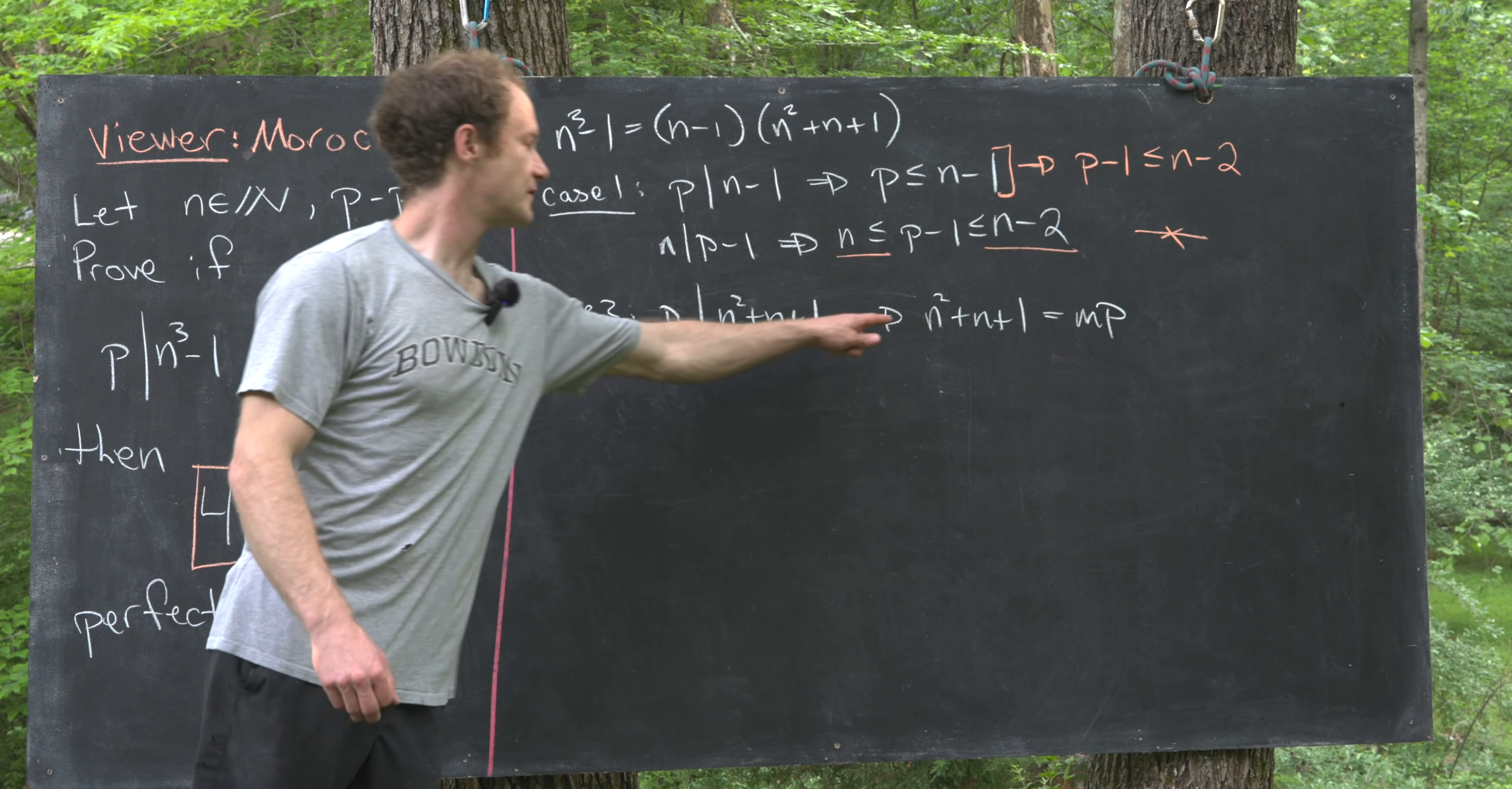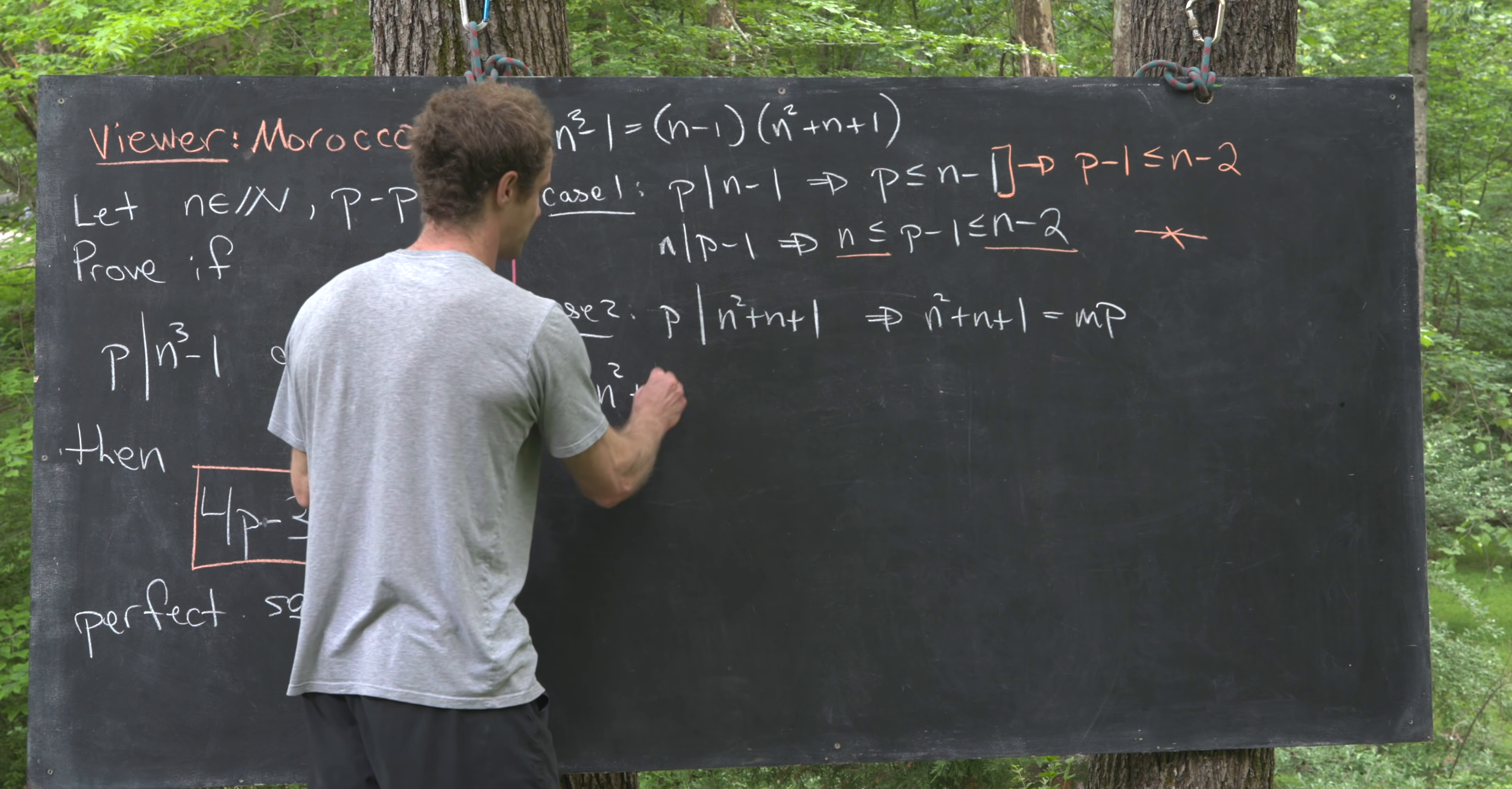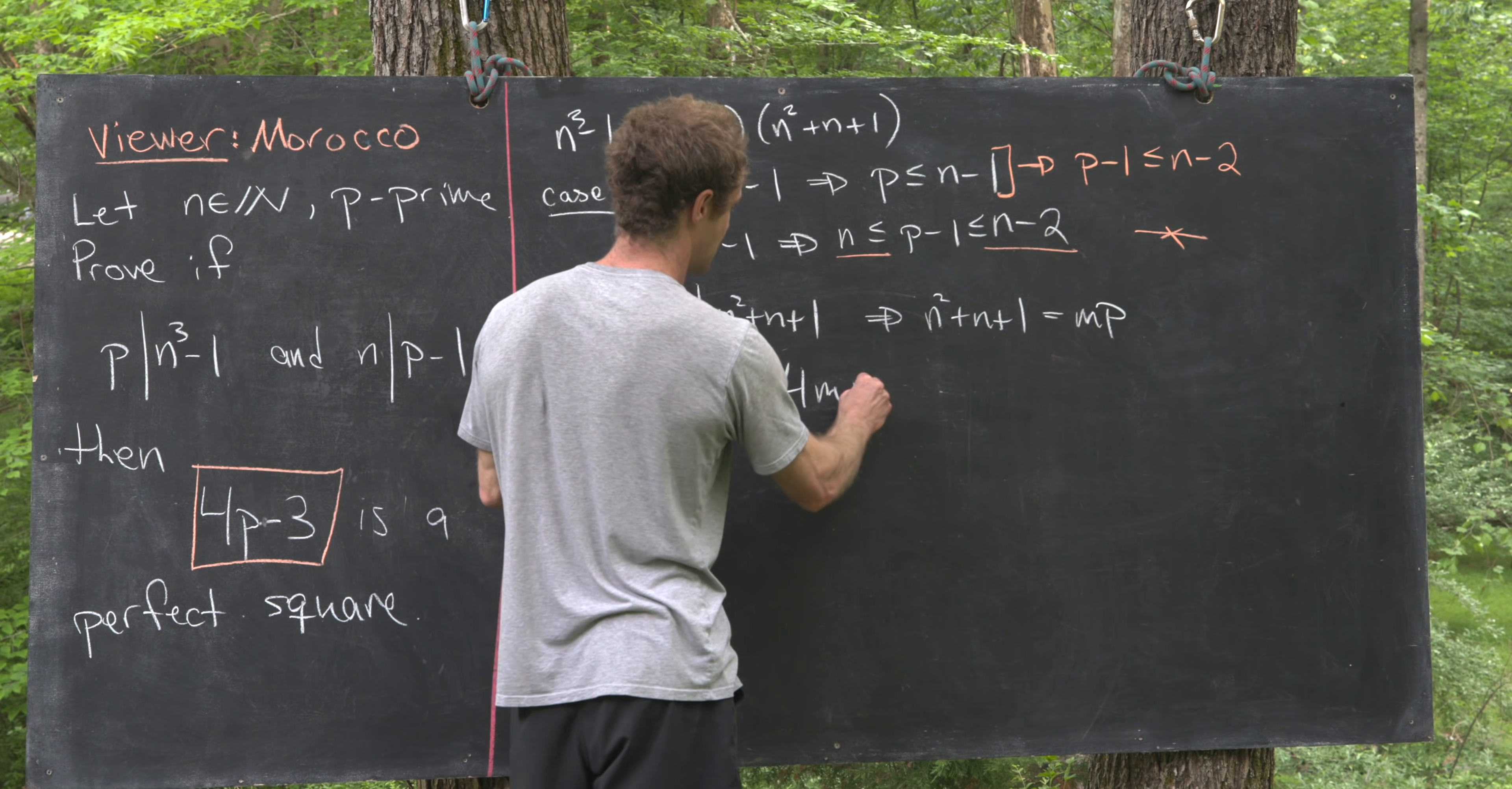So that gives us some motivation to multiply this equation by 4, so that'll give us 4n²+4n+4 equals 4 times mp.